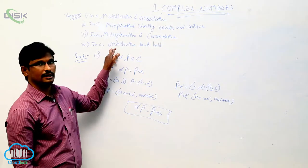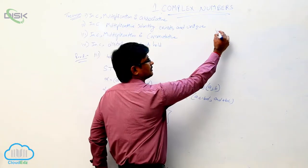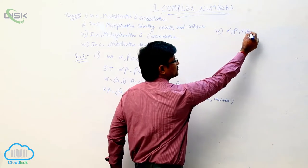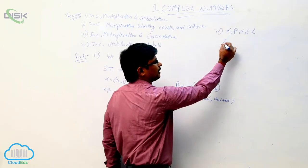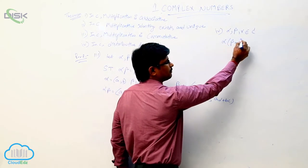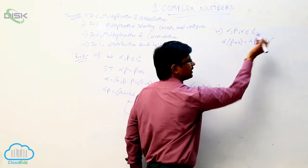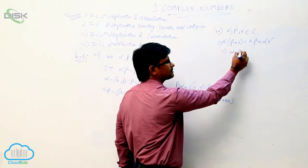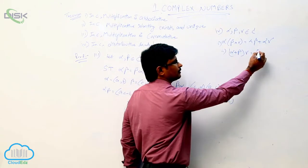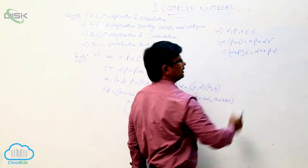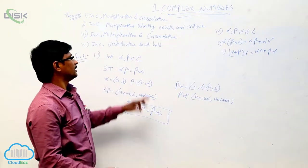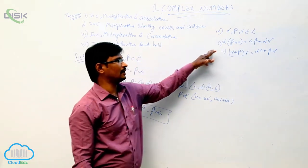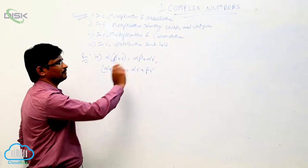Now we have to prove the distributive property. Let alpha, beta, gamma belong to the complex numbers. The first law: alpha·(beta + gamma) = alpha·beta + alpha·gamma. The second: (alpha + beta)·gamma = alpha·gamma + beta·gamma. These two are called the distributive laws. Now we have to prove these two — this is the fourth property.